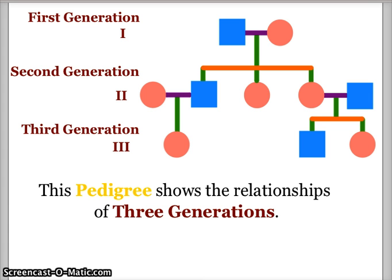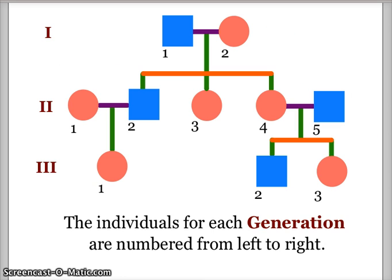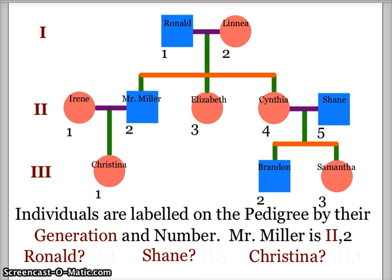Now, quite often what we will see in a pedigree is that each individual is numbered by generation. So each member of the generation will have a number, and we will label each individual by their generation and number.